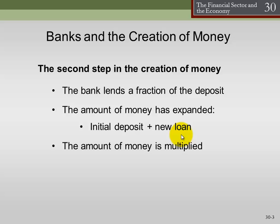This amount of outside money that the Fed creates gets multiplied — there's a multiplier effect. Sometimes we call the money that the Fed creates high-powered money, because it has this multiplier effect.